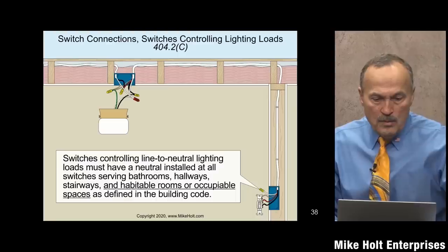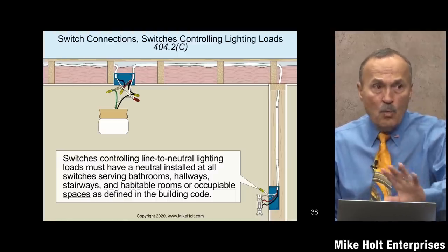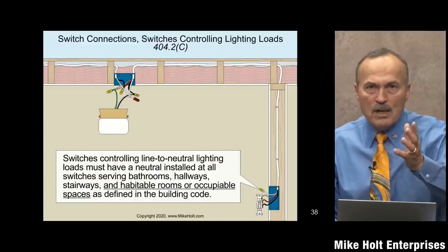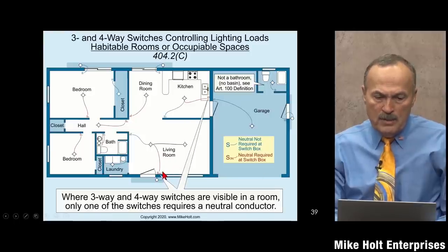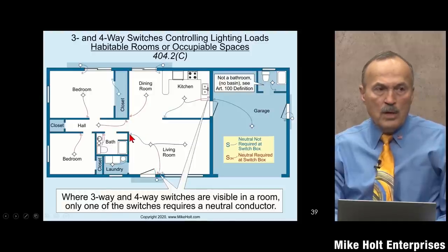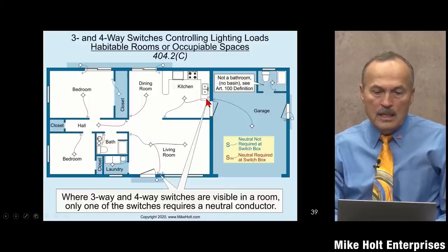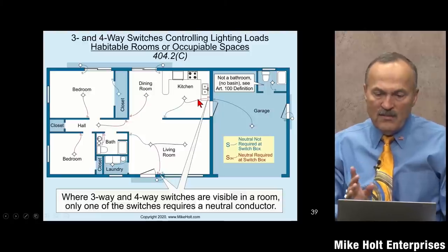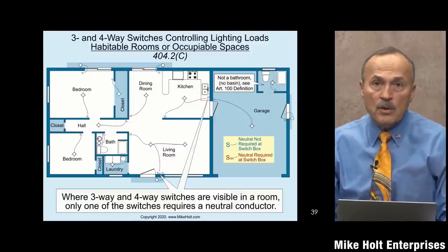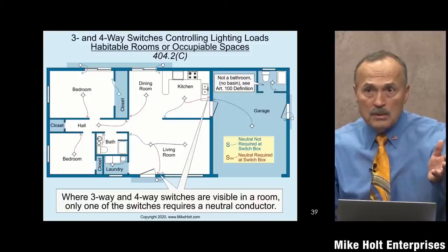The basic rule: you need a neutral, but the code tells you where. For three- or four-way switching where all switches are visible in the same room, you only need a neutral at one of those switches. For example, in a kitchen with two three-way switches, only one switch needs a neutral — the graphic highlights in red exactly which switch requires it.